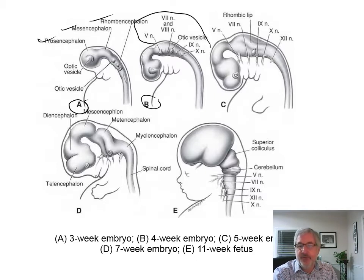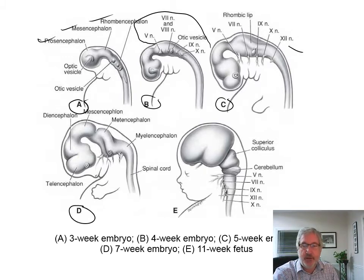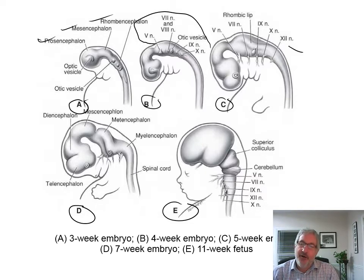At five weeks you can see the cranial nerves are extending, and the brain starts folding over making this folding-over kind of figure. At seven weeks there's even more folding over, the nerves are extending, and things are developing. Then at 11 weeks there's a little face and a brain that doesn't have any gyri or sulci to speak of. It looks like you have a lateral fissure starting to form, and the superior colliculus and the cerebellum are starting to form.